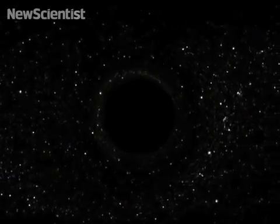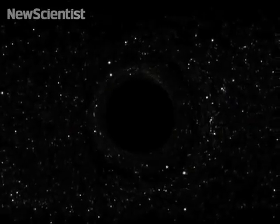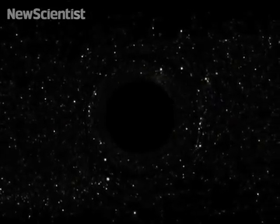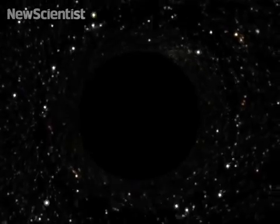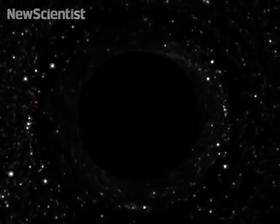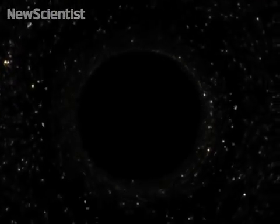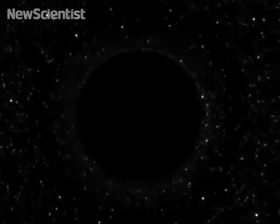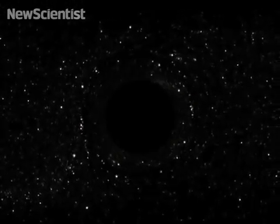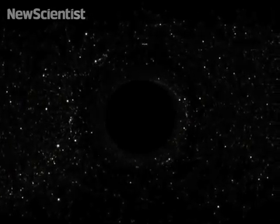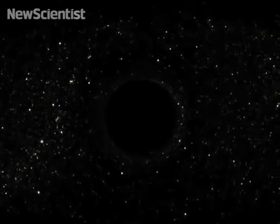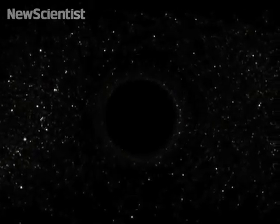This simulation shows how background stars would look to an observer orbiting a black hole. As distant stars approach the event horizon, their light becomes distorted. They appear twice on each side of the disc as they spin around it. The light bends because the black hole's immense gravity deforms the fabric of space-time that the light travels through.